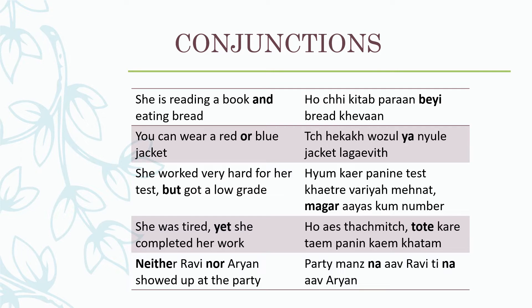Paran is 'reading', khywaan is 'eating'. You can wear a red or blue jacket: zhekkak wazul yaa newel jacket lagaywith. Or is 'yaa', red is 'wazul', blue is 'newel', zhekkak is 'can', and lagaywith is 'wear'.